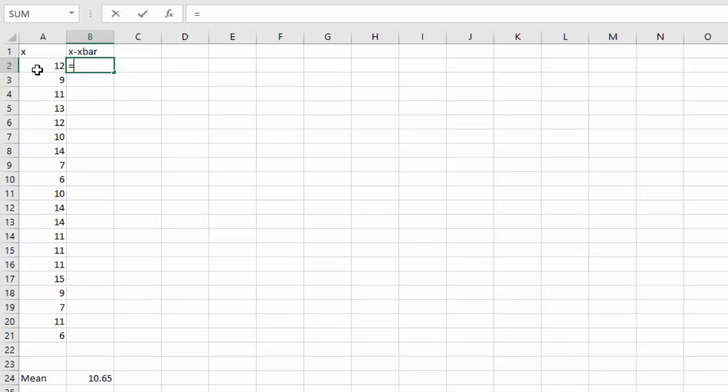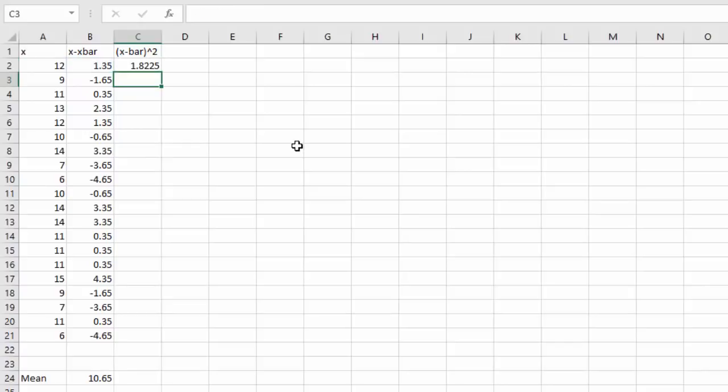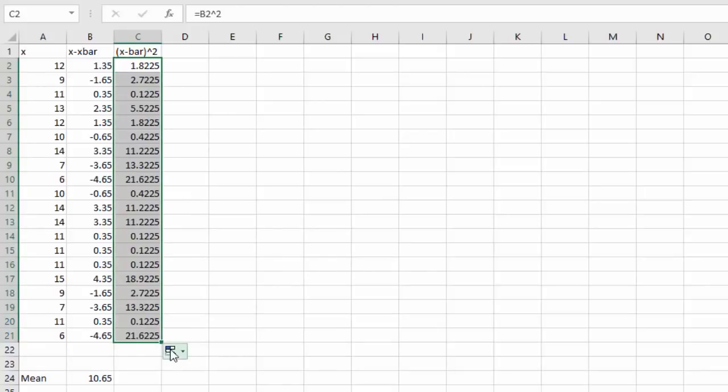So I'm going to say equals. Click my data value and subtract 10.65. Grabbing that dot and dragging it down gives us all of the x minus x bars. Next we have to do x minus x bar squared. To square the data value I'll hit equals. Select the box. By hitting shift 6 we get a caret to represent an exponent. Squared. And enter. Grab that bottom corner and stretch it down. And that gives me all the x minus x bar squared.